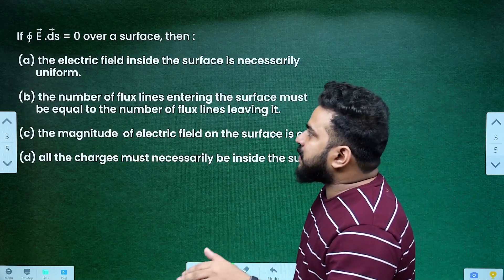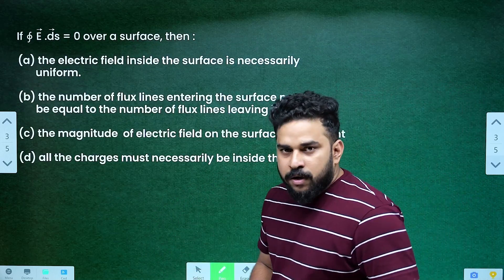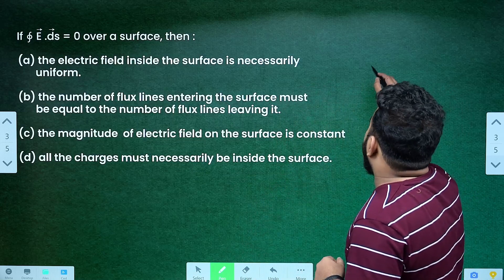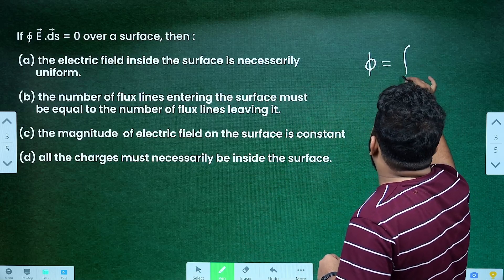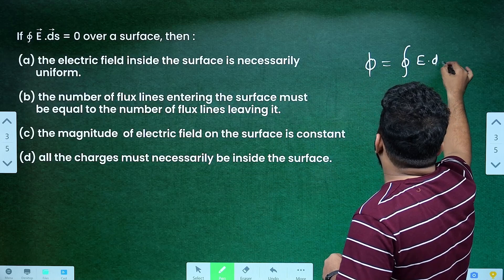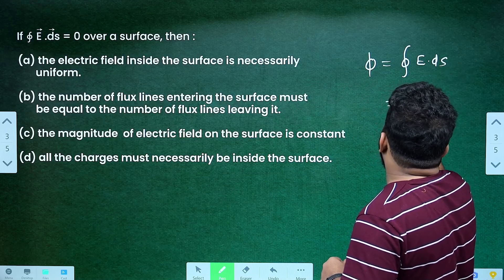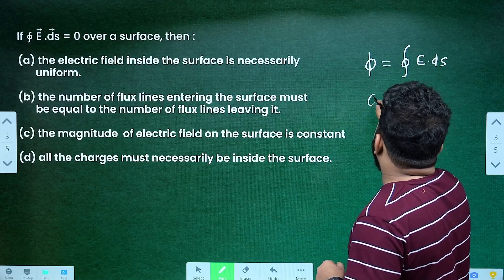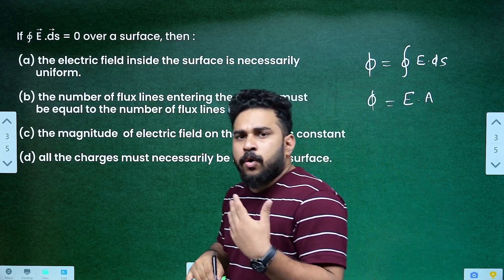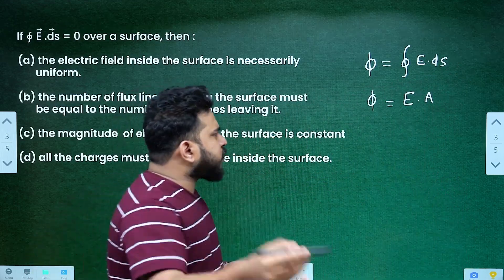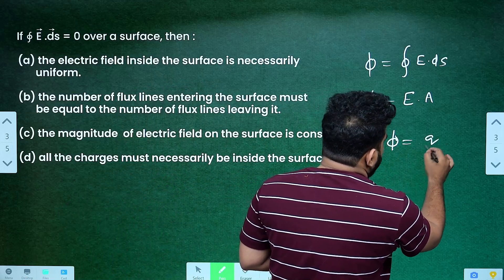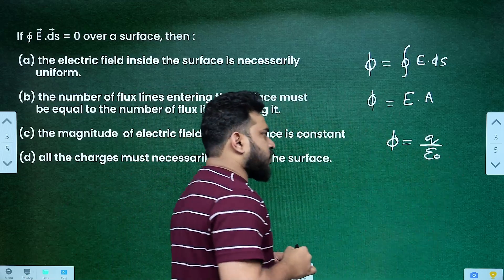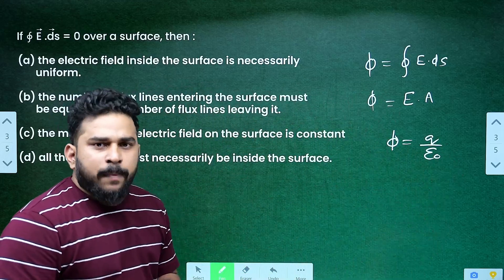If close integral E dot ds equals 0 over a surface, then you have a flux equation. What is the equation for flux? Flux is equal to close integral E dot ds, or flux is equal to E dot A. Then, Gauss's theorem: flux is equal to 1 by epsilon zero times total charge enclosed in the system. So you have to learn these equations.